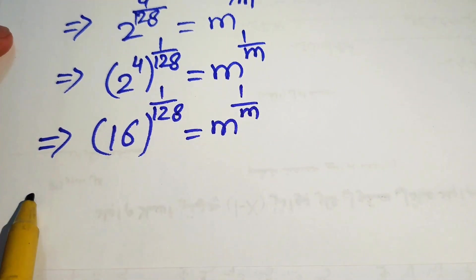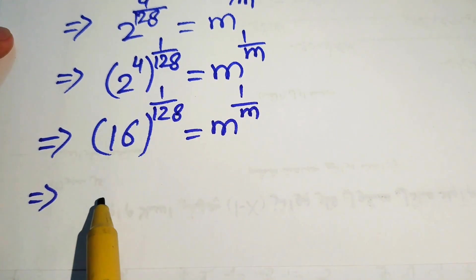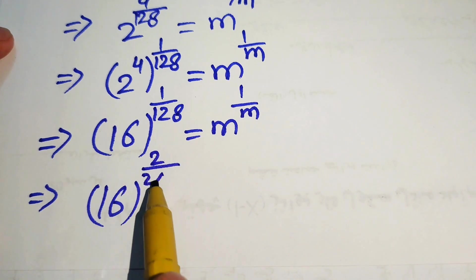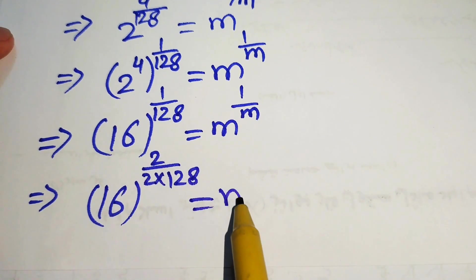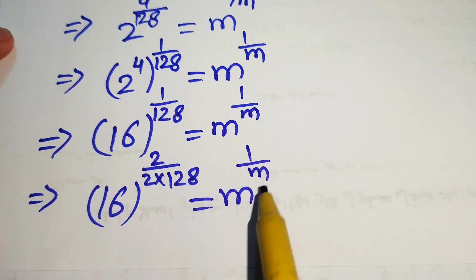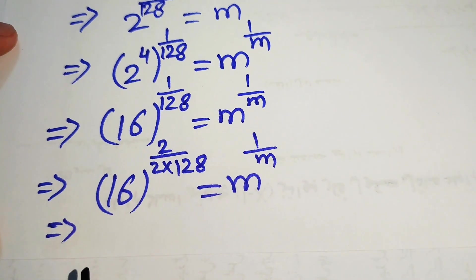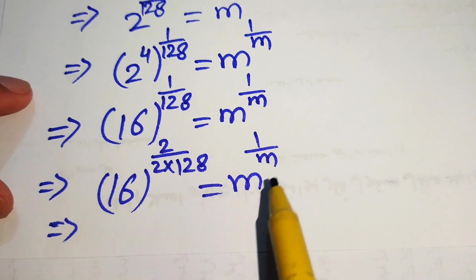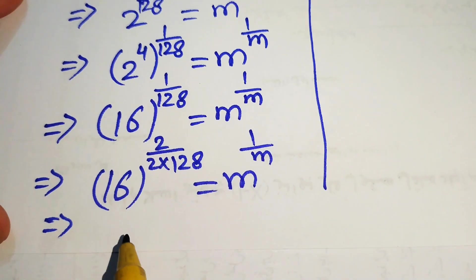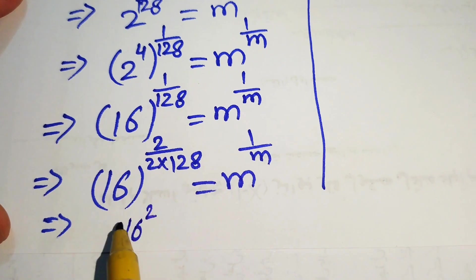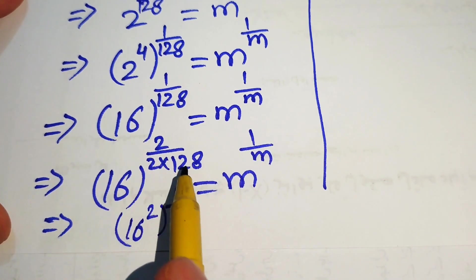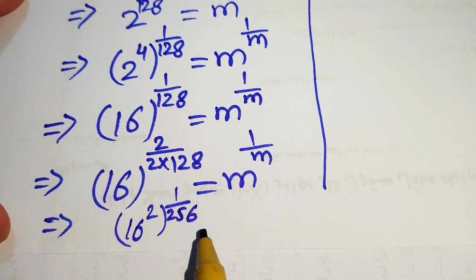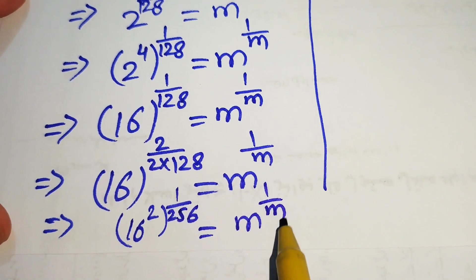We multiply and divide the exponent by 2 again, giving 16 to the power of 2 over 256. We move the 2 inside the exponent and write it as 16 squared, with whole power 1 over 256, equals m to the power of 1 over m.